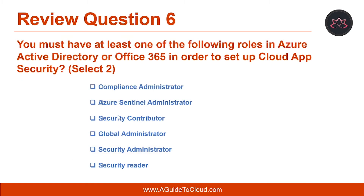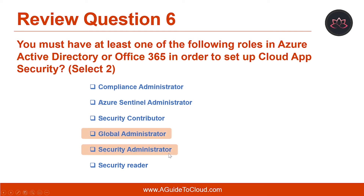Let's look at question number six. You must have at least one of the following rules in the Azure Active Directory or Office 365 in order to set up cloud app security. Select two. The correct answer is global administrator and security administrator.